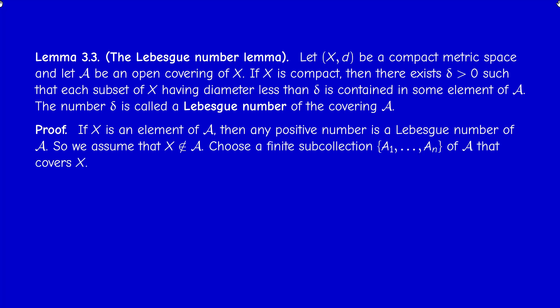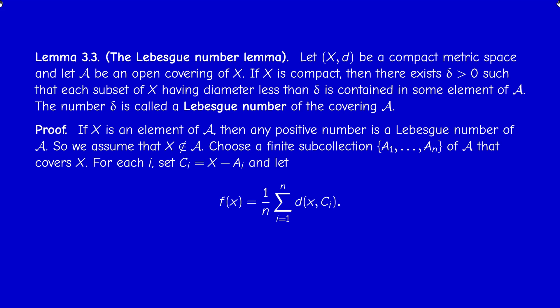The compactness assumption tells us we can cover X by finitely many elements of the collection, which I call A_1 through A_N. For each index i between 1 and N, take the complement of A_i, call it C_i, and consider the function F(x) = (1/N) times the sum of the distances from x to the closed sets C_i. Since each A_i is open, each C_i is closed, and F is continuous as a sum of continuous functions.